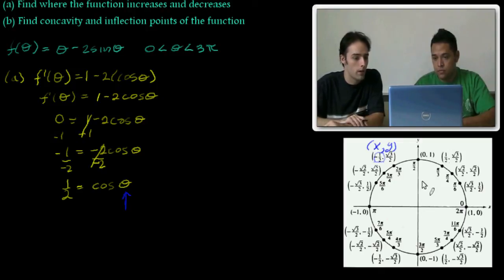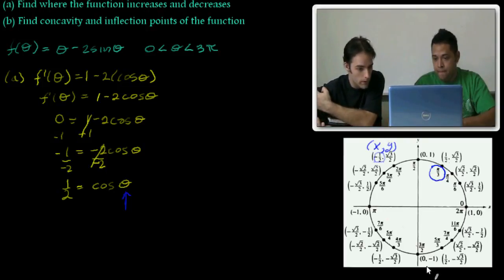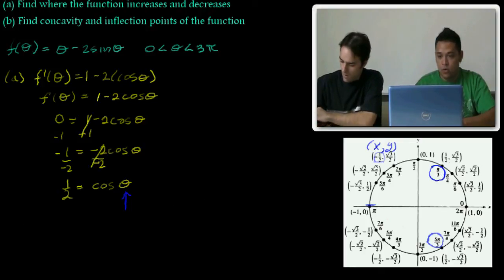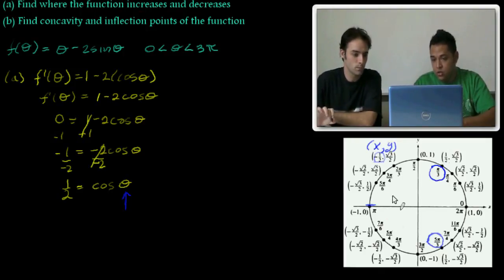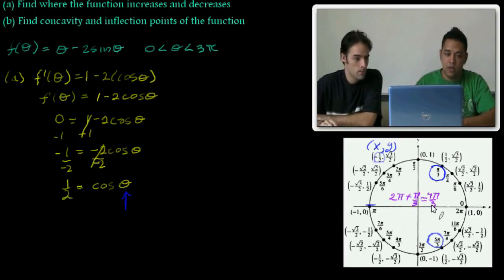Going from 0 to 3 pi, we have one at pi over 3. That's going to be one of our critical points. Where else? Right there at 5 pi over 3. So our range goes from 0 to 3 pi. We would need to use 2 pi plus pi over 3. What would that give you? 7 pi over 3. So 2 pi plus pi over 3 equals 7 pi over 3.